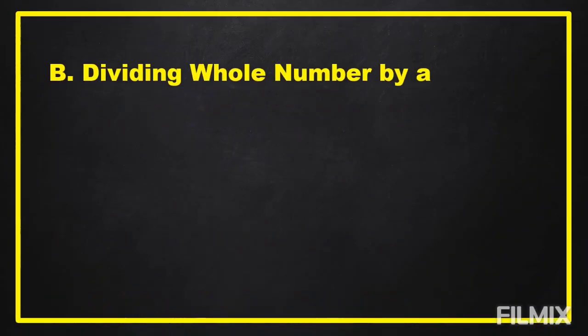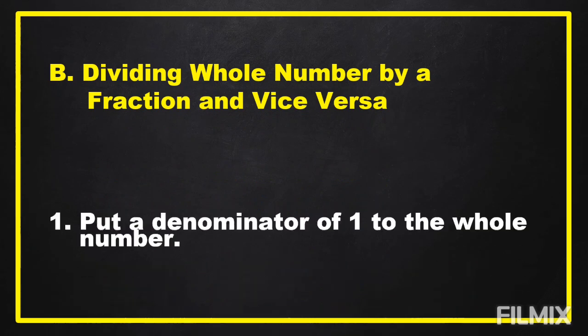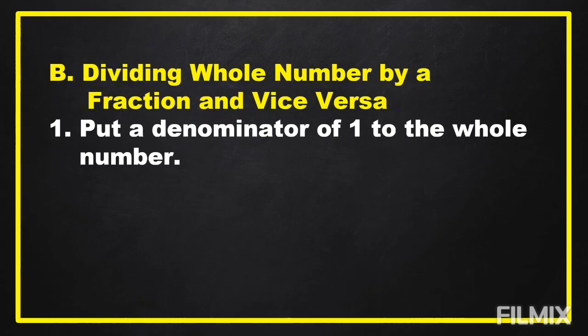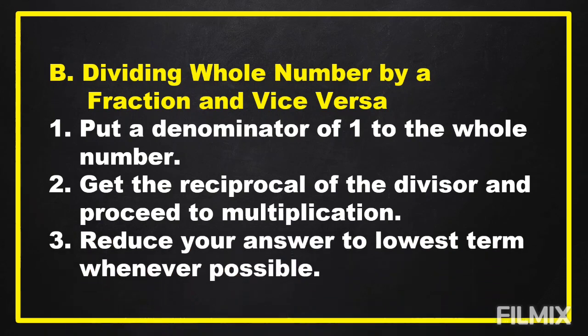Next is dividing a whole number by a fraction and vice versa. First, put a denominator of one under the whole number. Second, get the reciprocal of the divisor and proceed to multiplication. Third, reduce your answer to lowest terms whenever possible.